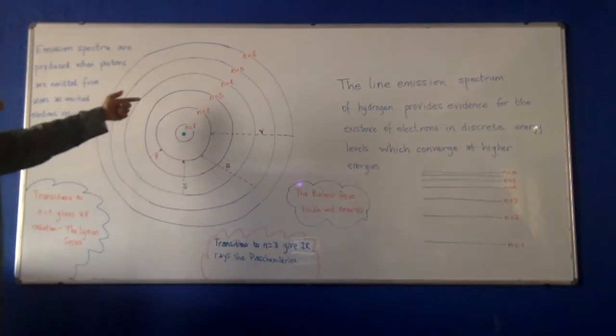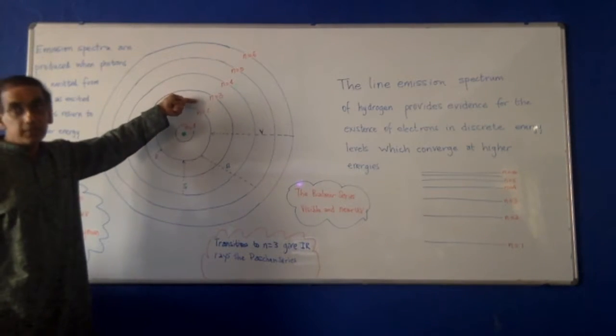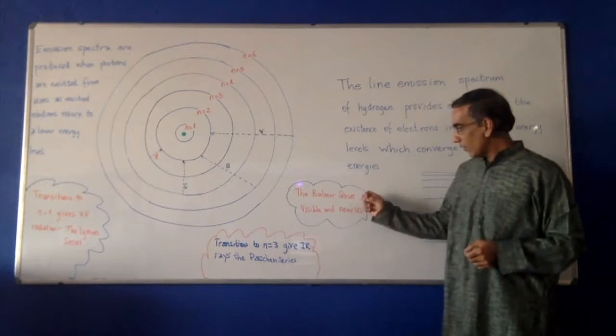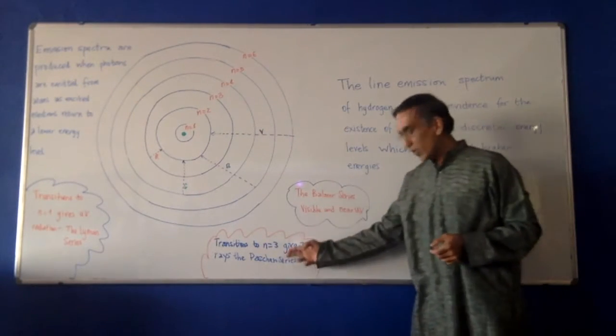Similarly, if we have a transition to the n equals three level, then that is going to give lines in the IR area of the spectrum. All of these are named for various researchers.